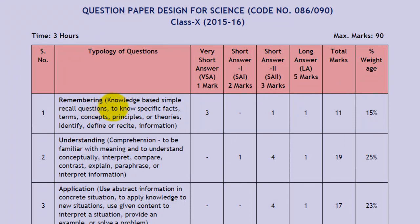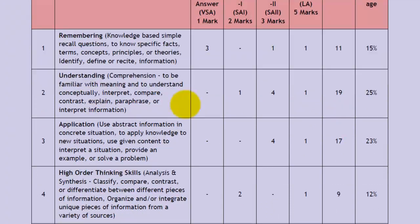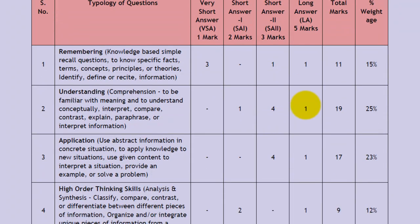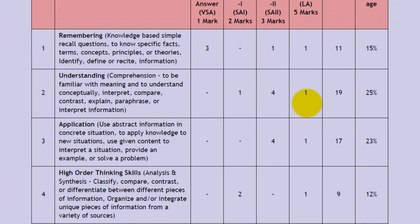Questions based on remembering: there will be 3 very short answer questions of 1 mark each, 1 short answer question of 3 marks, and 1 long answer question of 5 marks — total weightage is 11. Questions based on understanding: there will be 1 short answer question of 2 marks, 4 short answer questions of 3 marks each, and 1 long answer question of 5 marks.